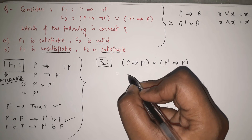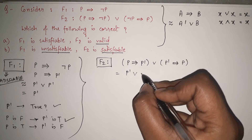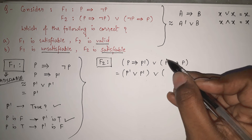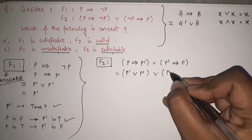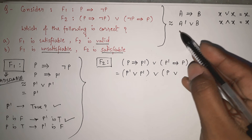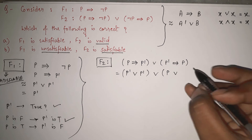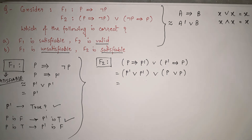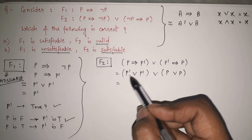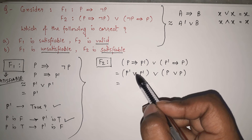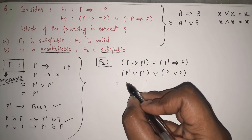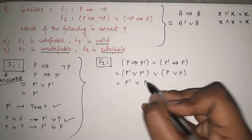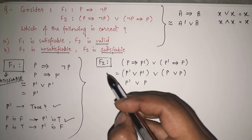Using the formula A implies B equals A dash or B: the first part P implies P dash becomes P dash or P dash. For the second part P dash implies P, the double negation of P dash gives P, so it becomes P or P. Now P dash or P dash gives P dash, and P or P gives P. So the simplified form of F2 is P dash or P.